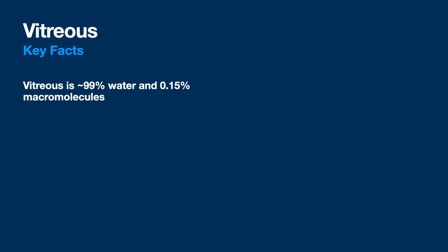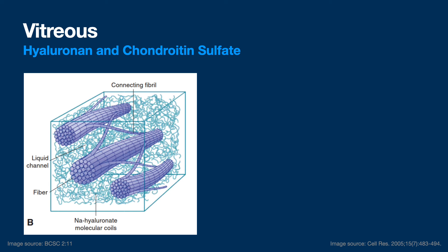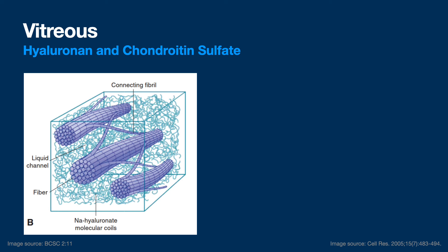The vitreous is 99% water with some macromolecules. Normal volume is 4 milliliters — I've seen 6, 7, or 8 with high myopes. For testing purposes, normal volume is about 4 milliliters. Two big structural components are hyaluronic acid and collagen fibers, and then there are some constituent groups the book talks about.